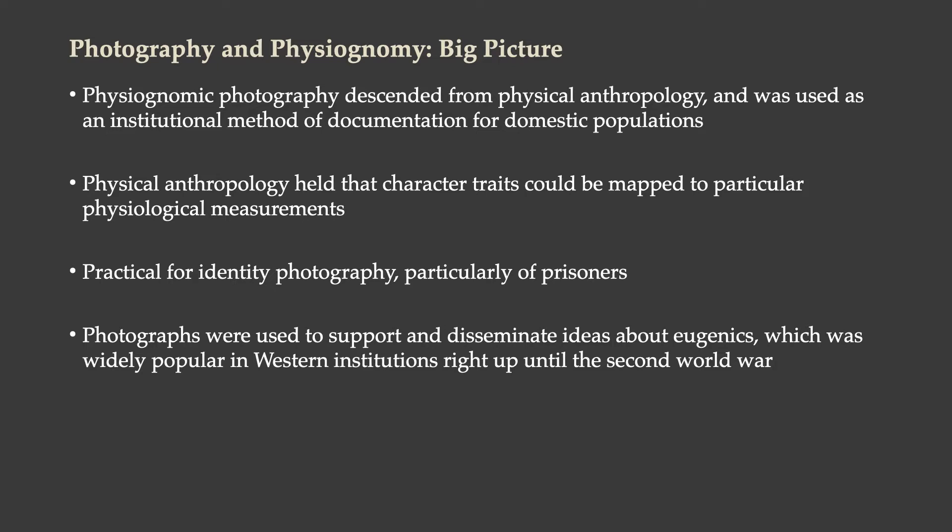Physical anthropology held that character traits could be mapped to particular physiological measurements — that a certain quality of person is reflected in specific measurements of their skull, their face, and things that can be physically measured. This was considered practical for identity photography, particularly of prisoners.